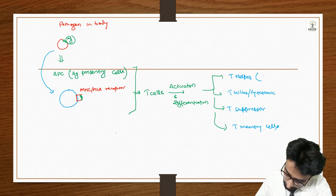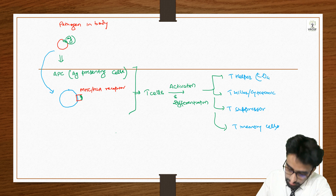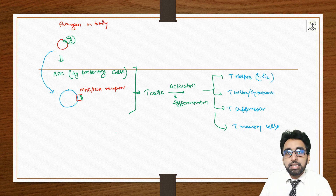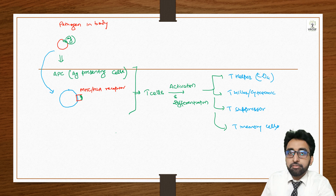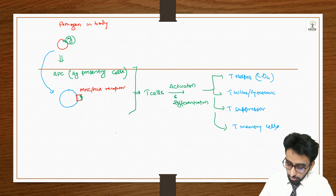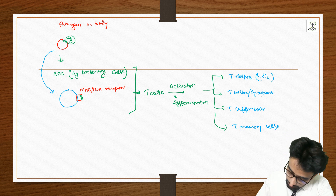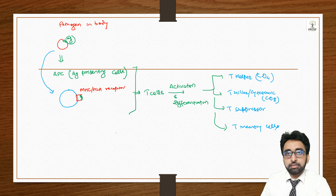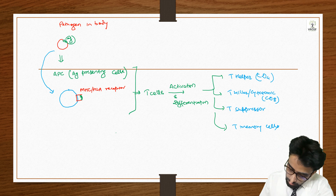T-helper cells are also called CD4 cells. CD stands for 'cells of differentiation' — they have a special differentiation receptor CD4. Similarly, T-cytotoxic cells are known as CD8 type of cells.